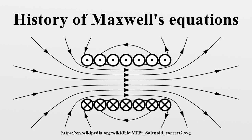However, Weber and Kohlrausch did not make the connection to the speed of light. Towards the end of 1861, while working on part three of his paper on physical lines of force, Maxwell travelled from Scotland to London and looked up Weber and Kohlrausch's results. He converted them into a format compatible with his own writings, and in doing so he established the connection to the speed of light and concluded that light is a form of electromagnetic radiation.